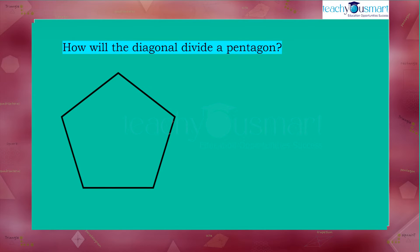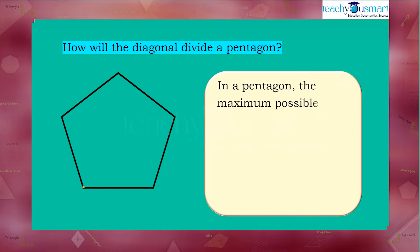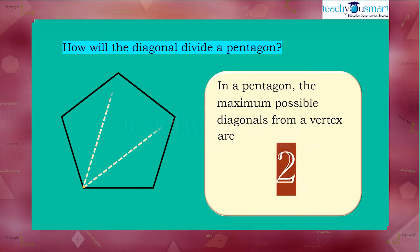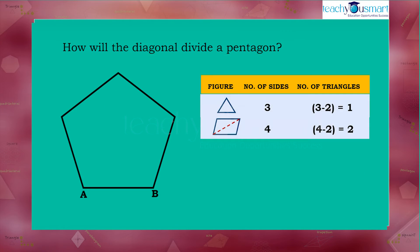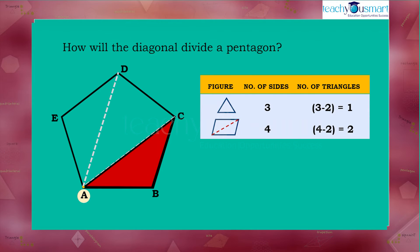Now let's see the case of a pentagon. In a pentagon, the maximum possible diagonals from a vertex are two. Here, in pentagon ABCDE, the number of diagonals from vertex A are two. Therefore, the diagonals divide the pentagon into three triangles: triangle ABC, triangle ACD, and triangle ADE.